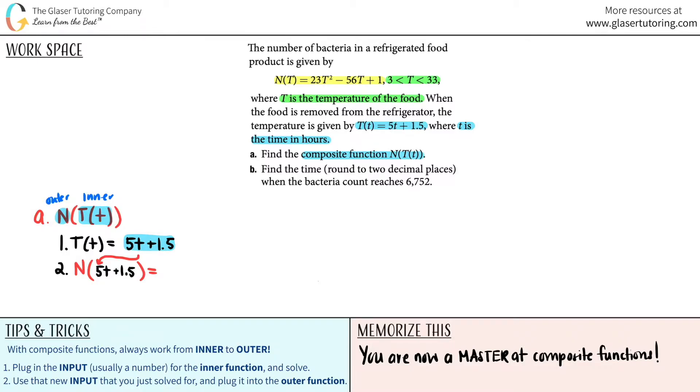Here we go. It's going to be 23 times, it's not the capital T anymore, it's now (5t + 1.5) and that is squared, minus 56 times (5t + 1.5), plus 1. That's the composite function. If you need to simplify and work on your algebra skills and foiling, you can foil this out and distribute. The 56 should be multiplied by both of these.